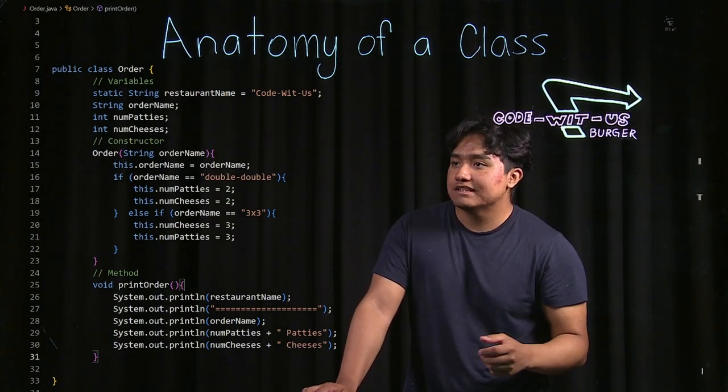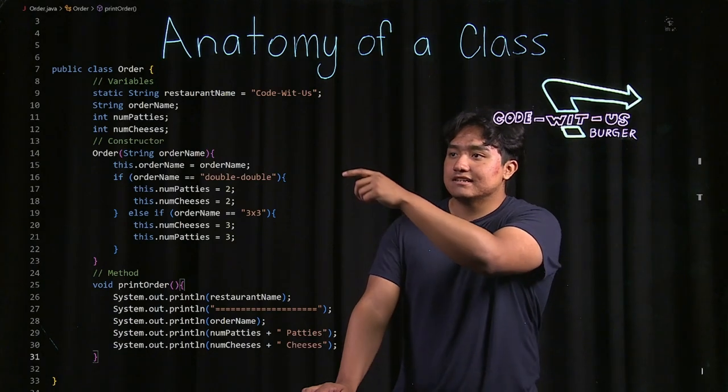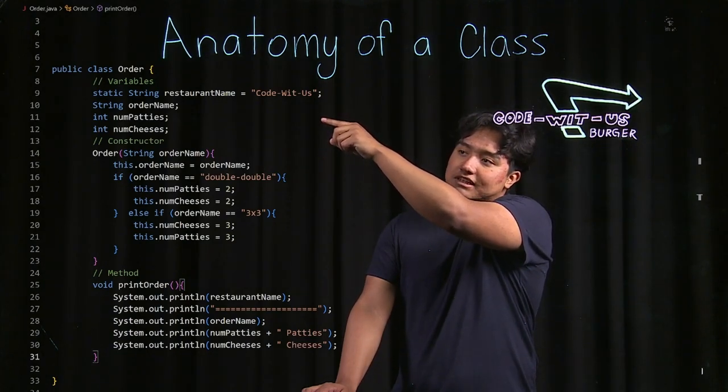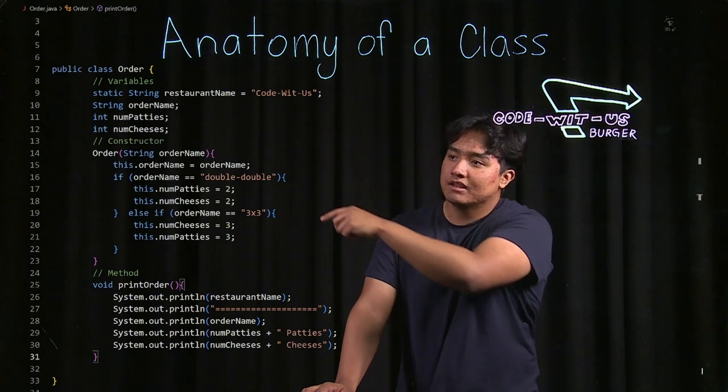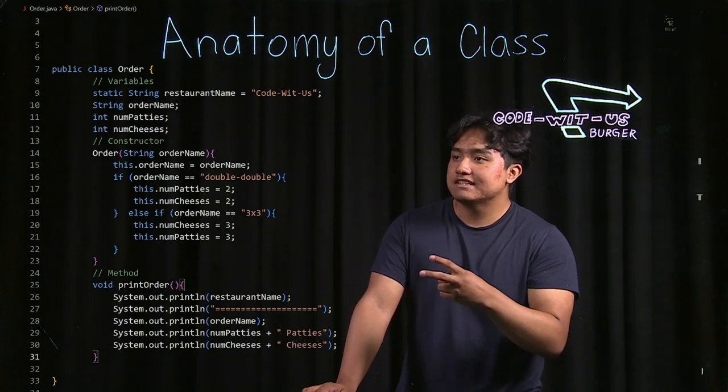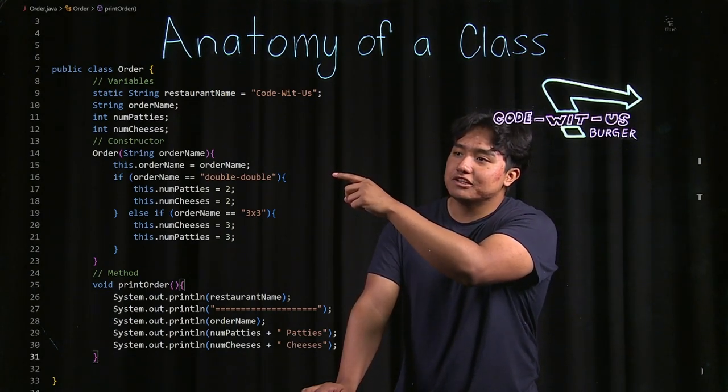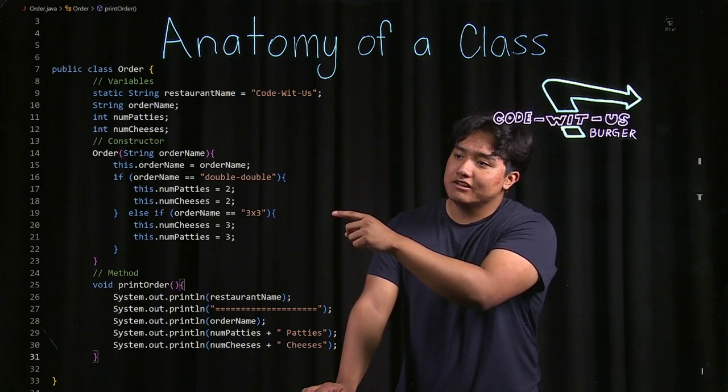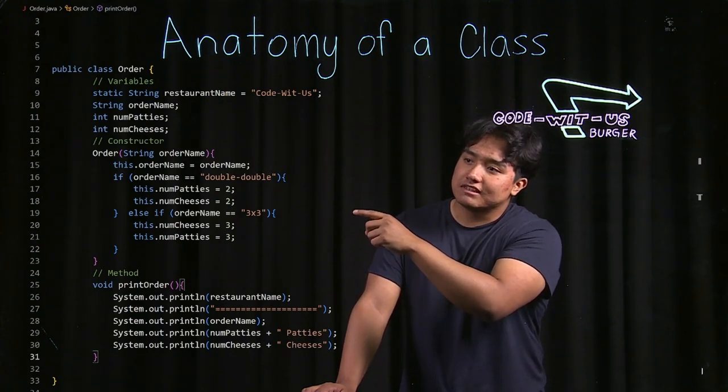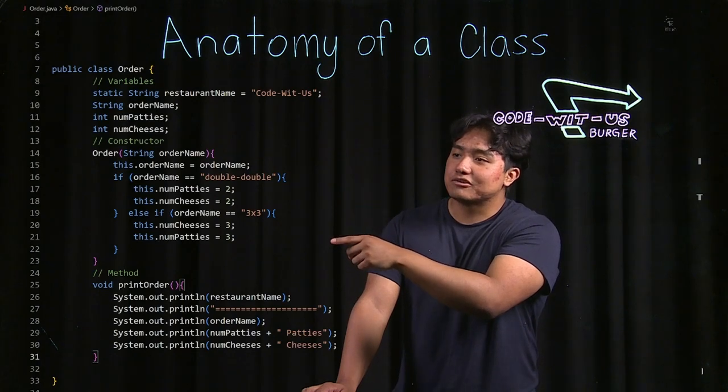So in our constructor we can see it'll set the order name from the class to the order name of the parameter in this line, and then we handle two different scenarios: if the order name is double double then we give the numpatties a value of two and numcheese a value of two, or if it's a three by three then we set them both to three.